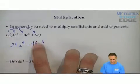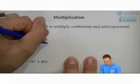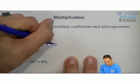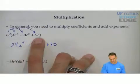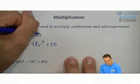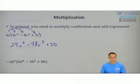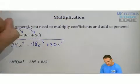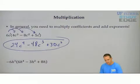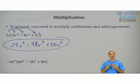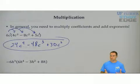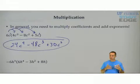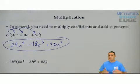Lastly, 6 times 5 gives you 30. And c times c — that's c to the first and c to the first — 1 plus 1 gives you c squared. And that's how you multiply, or rather, distribute. Distribute means multiply.